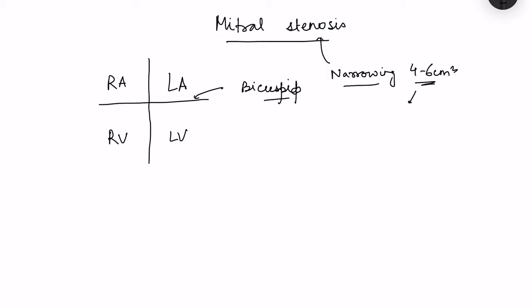When this opening decreases to less than 2.5 centimeters square, we say that mitral stenosis has developed. When it decreases to less than 1.5 centimeters square, we call it severe mitral stenosis, and when it is less than 1 centimeter square, we call it critical mitral stenosis.